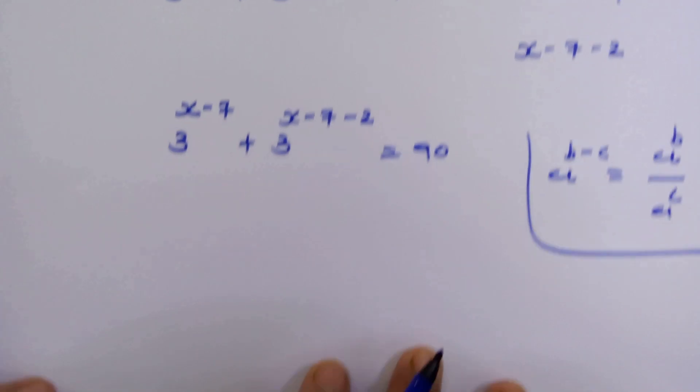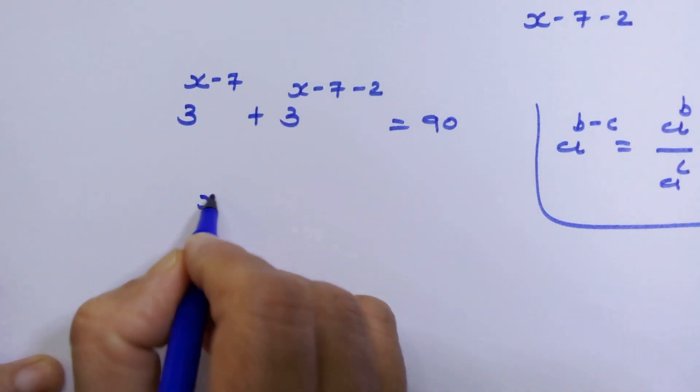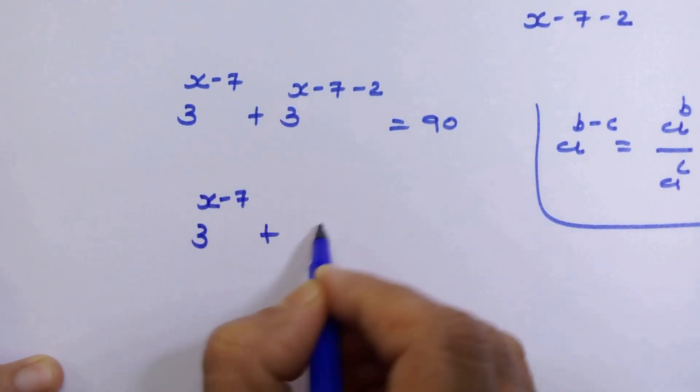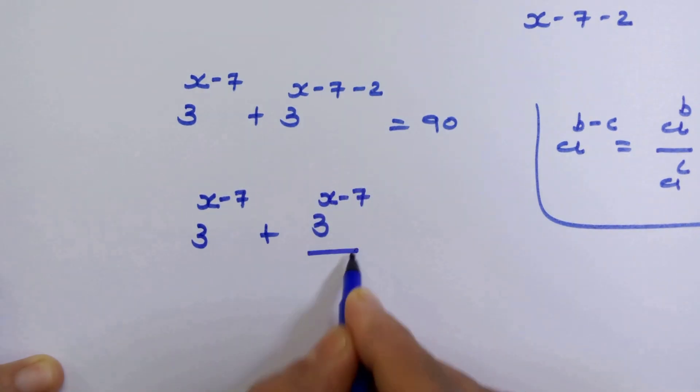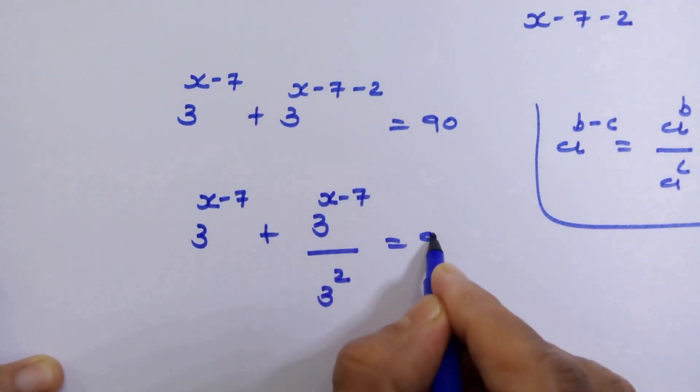In this manner, here we can write 3 raised to x minus 7 plus 3 raised to x minus 7 upon 3 squared is equal to 90.